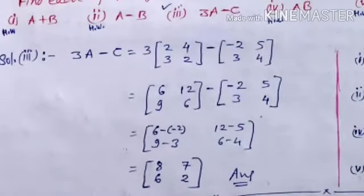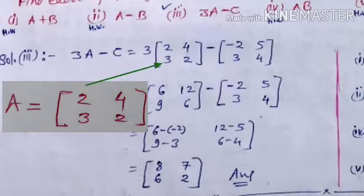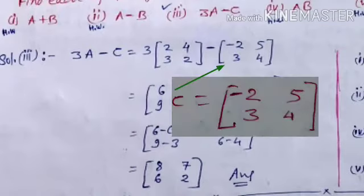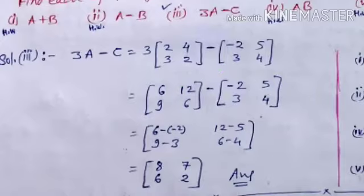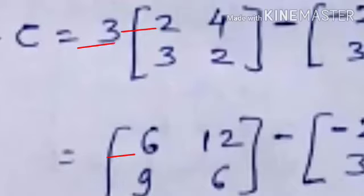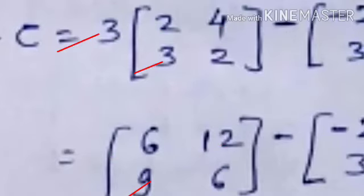Here we will do the third part, which is 3A minus C. So 3 into A — A means matrix A which is [2, 4; 3, 2] — minus C, which is [-2, 5; 3, 4]. First, for 3A, each element of matrix A is multiplied by 3. So: 3 into 2 is 6, 3 into 4 is 12, 3 into 3 is 9, and 3 into 2 is 6.